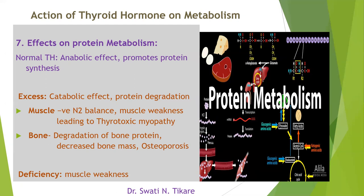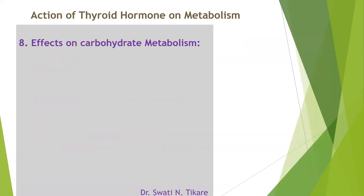In deficiency, because there is no anabolism, there is also muscle weakness — but the underlying mechanism is different from excess. In excess, protein bulk is broken down; in deficiency, protein is not being synthesized. So both excess and deficiency cause muscle weakness through different mechanisms. The effect on protein metabolism is basically anabolic at normal levels.